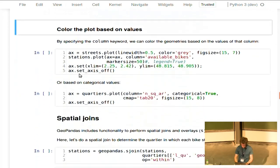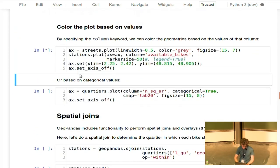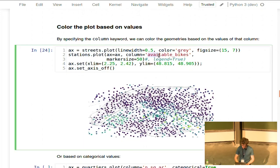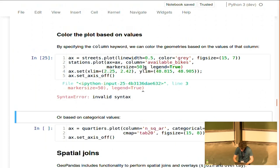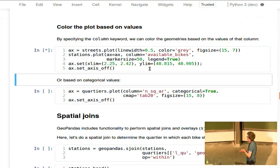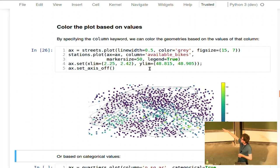I can also color my plot based on a certain value. For example, here, which are the available bikes, I specify to use the available bikes to color my plot. I can also do, for example, legend is true to get a color bar with it. And here you see that closer to the center, there are more available bikes, so all people went with their bikes to the center, and there are a lot of bikes available, while further away from the center, there are less bikes available.